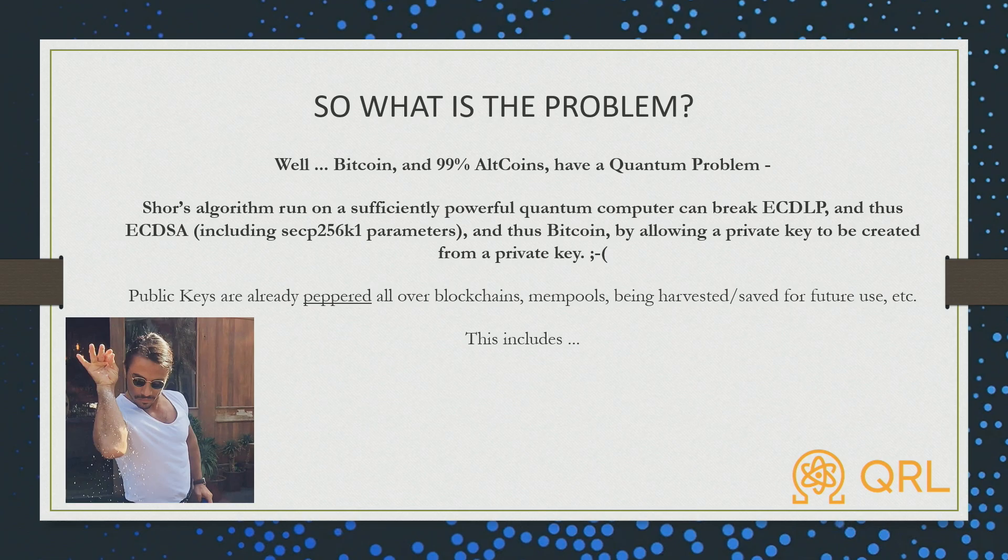Public keys are already peppered all over the blockchains and mempools. Public keys are being harvested for future years — store now, decrypt later — all those things. Public keys are meant to be out in the open, and they are.